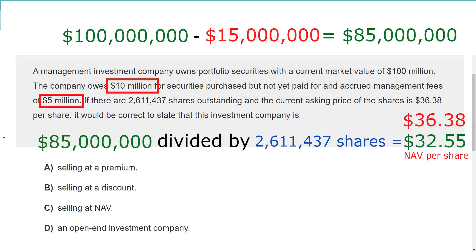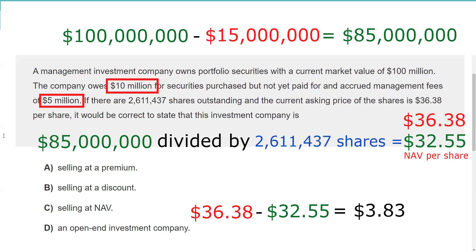To calculate the percentage sales charge of a mutual fund is itself testable math. We take the public offering price of $36.38 minus the NAV of $32.55 — that's a sales charge of $3.83. The formula is: sales charge divided by the public offering price equals the percentage sales charge. When we do that math, we get 10.5%. This most certainly cannot be an open-end fund, because open-end funds can't charge more than 8.5%. So the answer is confirmed: it is selling at a premium to the NAV.